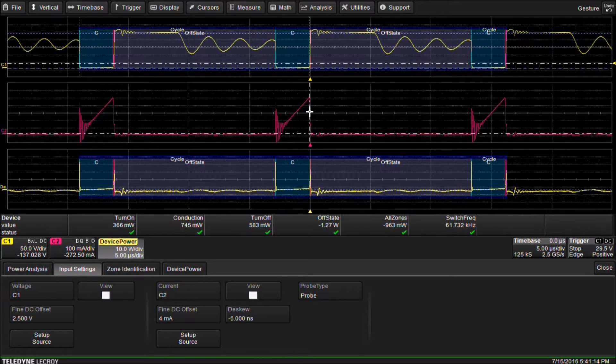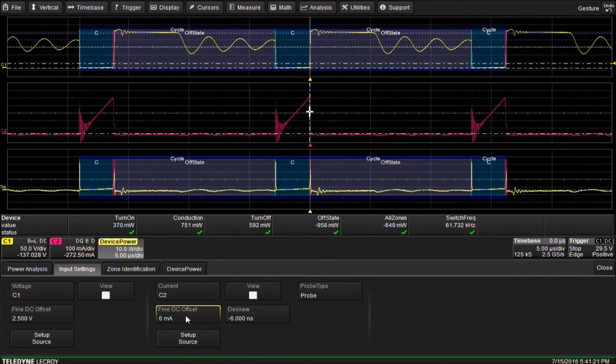To eliminate any leftover offset in the system, we adjust the Find DC offset on the current probe until we see the offstate parameter is as close to zero as possible.